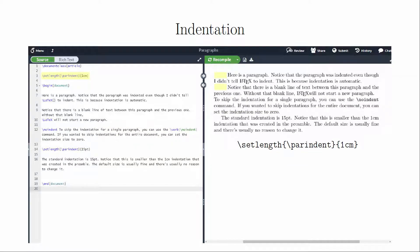If you wanted to change the indentation of the entire file, you would need to modify the indent size either in the preamble or at the beginning of the document. Here's how the command looks for a one-centimeter indentation. You could use several different units in LaTeX, but we won't focus on that.